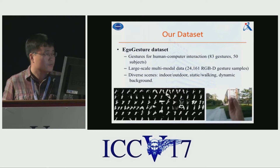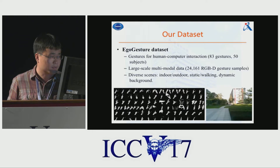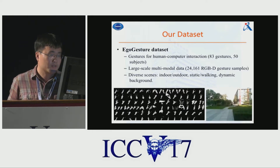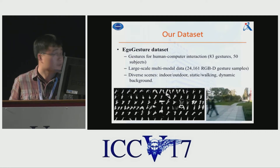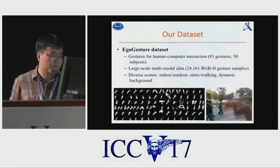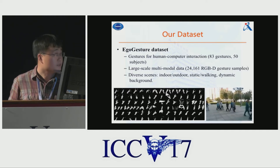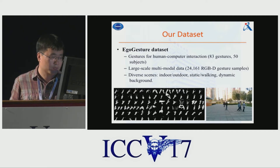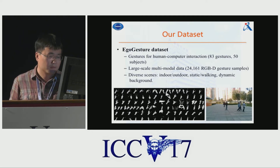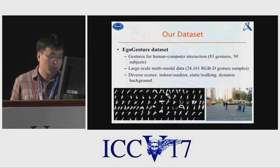We also build an Egocentric Gesture dataset. We design 83 classes of gestures for human-computer interaction. It contains 50 subjects and more than 24,000 RGBD gesture samples, and it has diverse scenes such as indoor or outdoor scenes, and the subjects can perform the gestures while they are standing or walking.